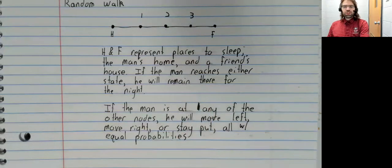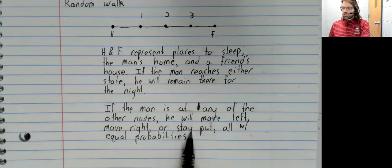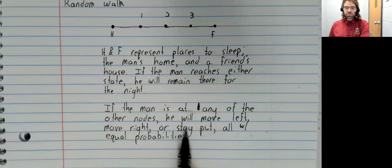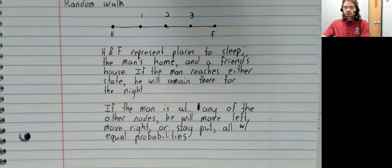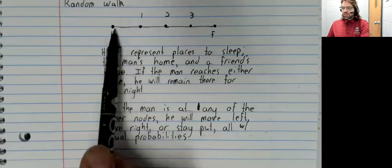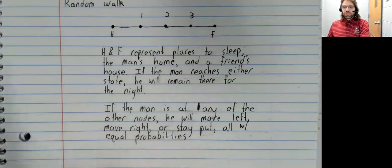If the man is at any of these other nodes though, he will do one of three things. He will move left, he will move right, or he will stay put, all with equal probability. And I mentioned that this is a little different from the written notes. The written notes don't include a stay put option. This is a Markov chain.